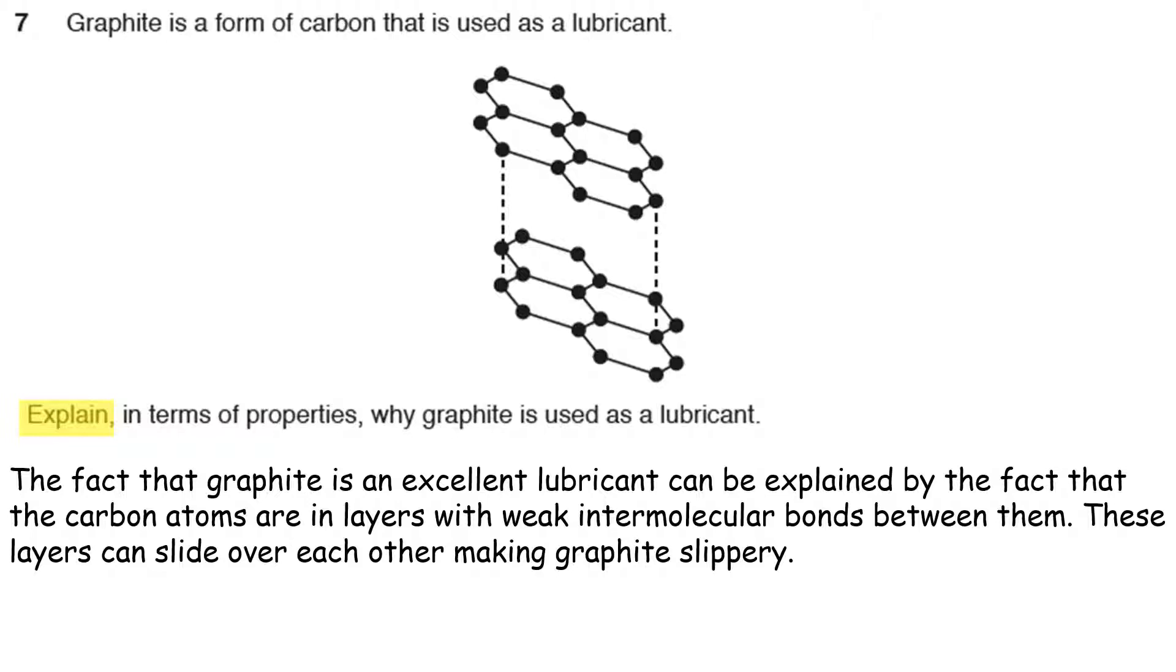The fact that graphite is an excellent lubricant can be explained by the fact that the carbon atoms are in layers with weak intermolecular bonds between them. These layers can slide over each other making graphite slippery. Once again, I've just taken three very quick points that I scribbled down in the margin and put them together to make something that sounds pretty good.